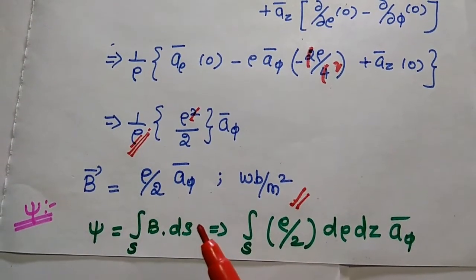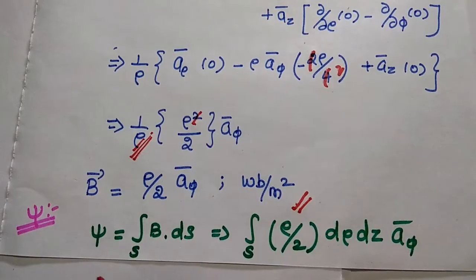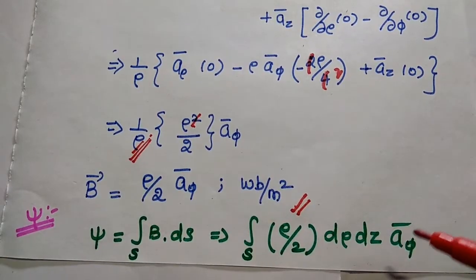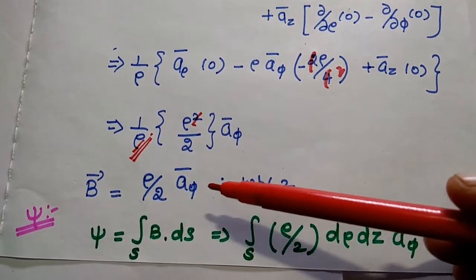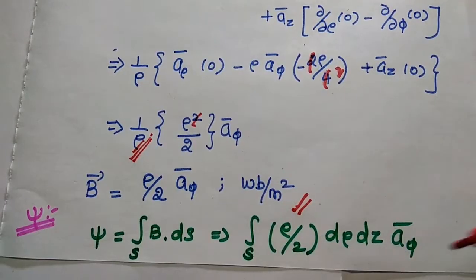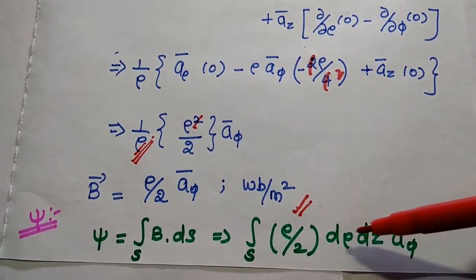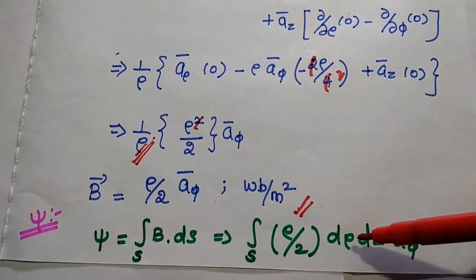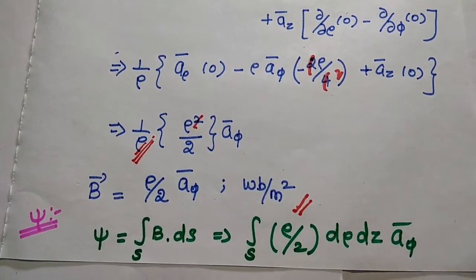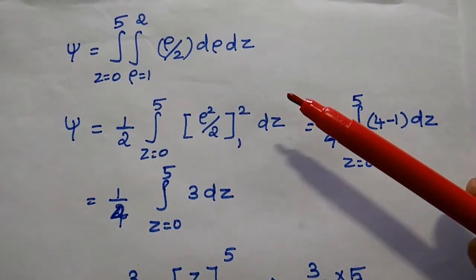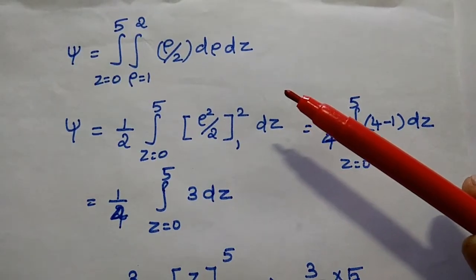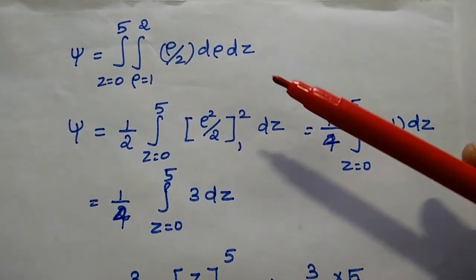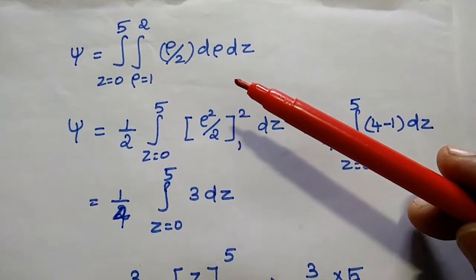Now we have obtained the magnetic flux density from the magnetic vector potential A. After getting this B value, we find the total magnetic flux ψ. ψ equals the surface integration of the magnetic flux density. The field component is âφ, so we consider the surface area with respect to ρ and z. We take the surface integration of ρ/2 with respect to ρ and z, substituting the limits: z from 0 to 5, and ρ from 1 to 2.